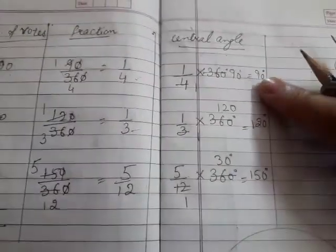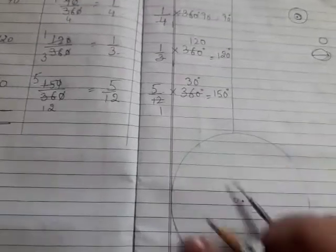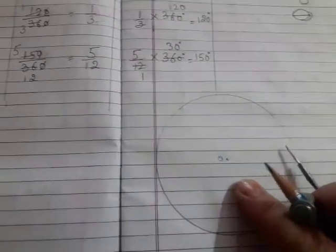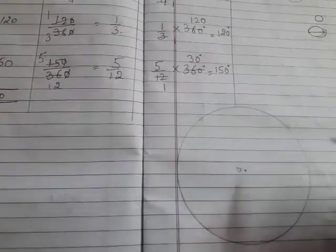Now, by using this information, central angles, we represent all the central angles in the pie chart. Firstly, we draw a circle with any radius. Then, we draw a baseline and draw our first angle that is 90 degrees.